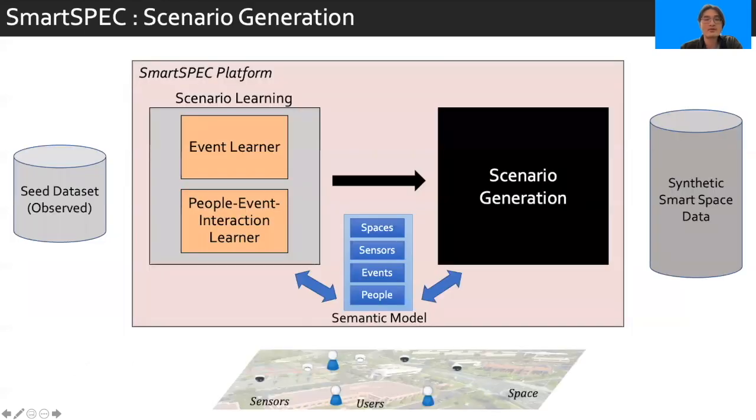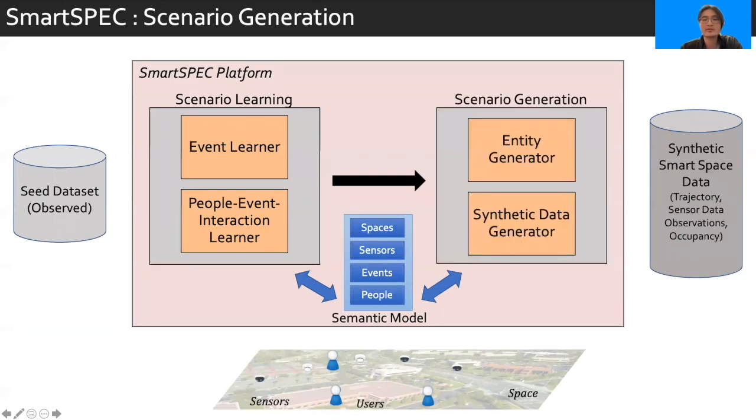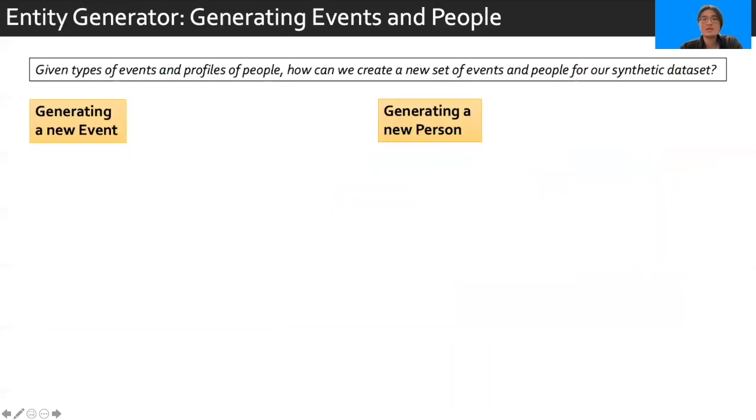The next step after learning of these events and people is going to be scenario generation. This is going to be comprised of two different parts. The entity generator, which generates a new set of events and people to simulate, and the synthetic data generator, which produces synthetic data.